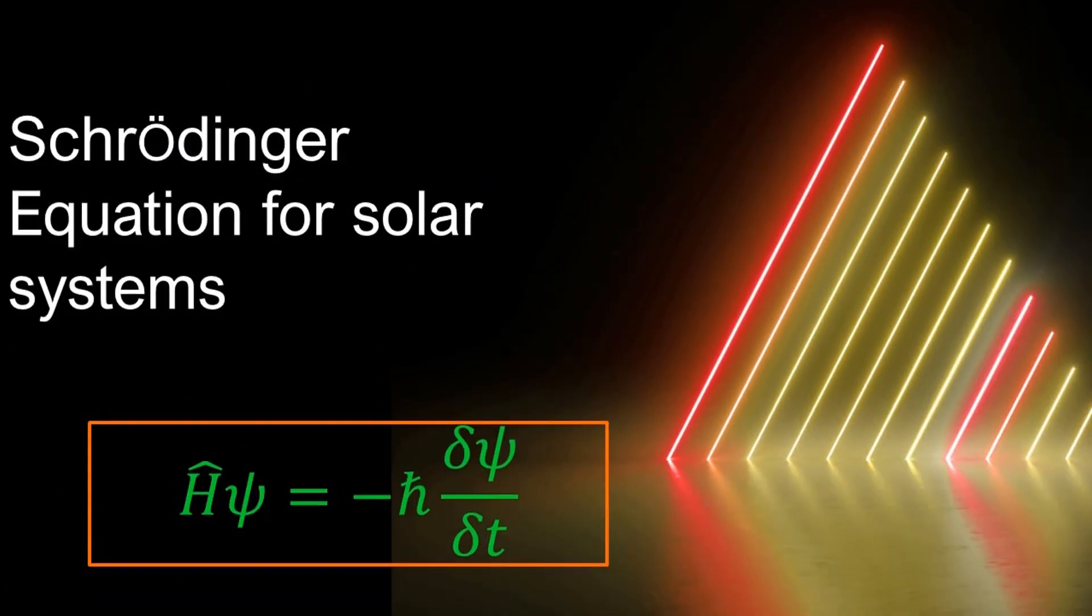In my other video titled The Schrodinger Equation for Planets Basics, under the quantum gravity playlist, I have shown mathematically, just like I have done in the previous example, that the energy of a planet is equal to the Planck's constant, G, times its associated frequency.